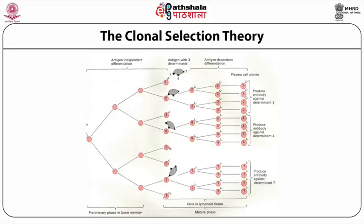Clonal selection theory is analogous to the Darwinian concept of natural selection. B cells produced by bone marrow are circulating cells of the blood and lymph. Lymph is the fluid in the tissues. B cells have a lifetime — they are released, circulate in the blood or lymph, and they die after a while.